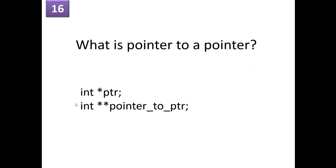What is a pointer to pointer? 'int *ptr' is a normal pointer. You can also write 'int **ptr2', which is a pointer to pointer — a double pointer. You can make this double pointer point to the first pointer. That is why it is called a pointer to a pointer.